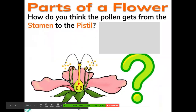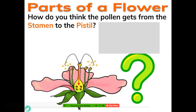So how do you think the pollen gets from the stamen to the pistil? You're going to write in the box and tell me what you think happens. Does the wind carry it? Does an animal carry it? Does it just fall there? How does it get from the stamen to the pistil?